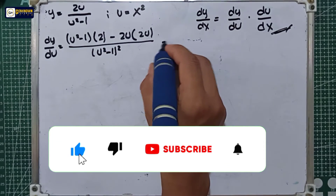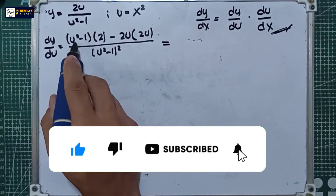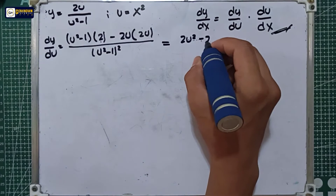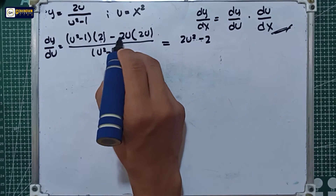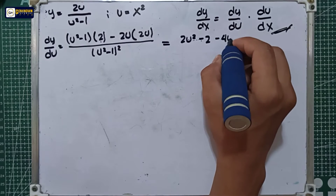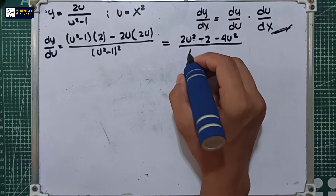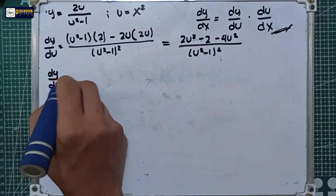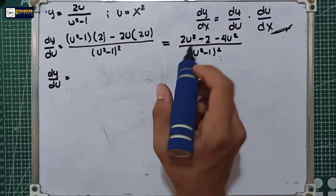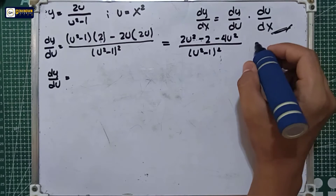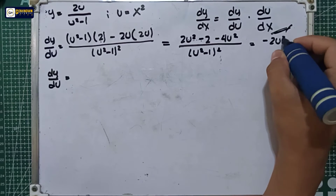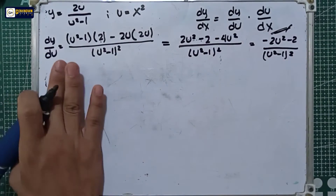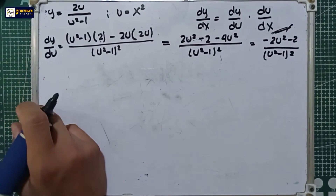The derivative of the denominator is 2u, all over the denominator squared, which is u squared minus one squared. Simplifying, we have 2 times negative 1 equals negative 2, and negative 2u times 2u equals negative 4u squared. So dy/du equals 2u squared minus 4u squared, which gives negative 2u squared minus 2, all over u squared minus 1 raised to the 2.